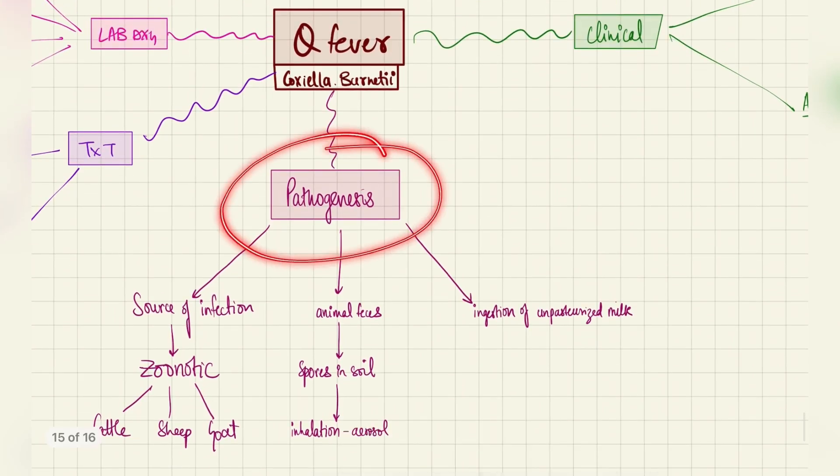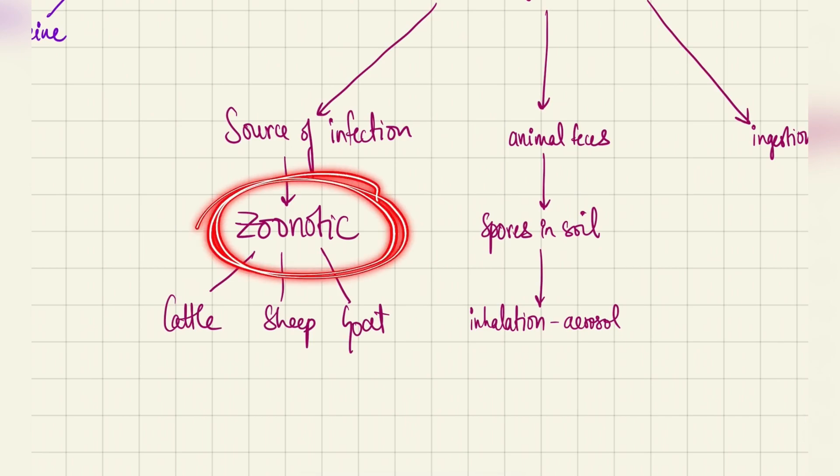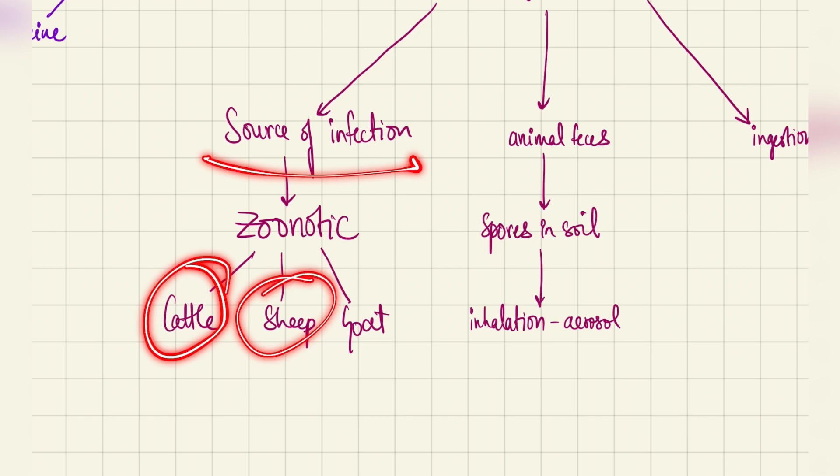Coming to the pathogenesis, the source of infection of Q fever is zoonotic infection caused by cattle, sheep, or goat. This is I think the only question that can be asked from this topic. What is the source of infection? Cattle, sheep, and goat.